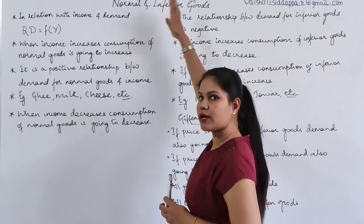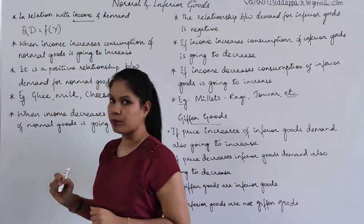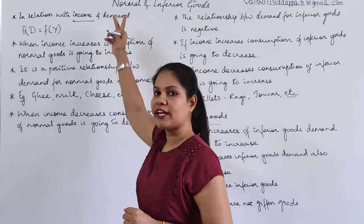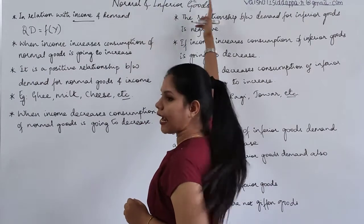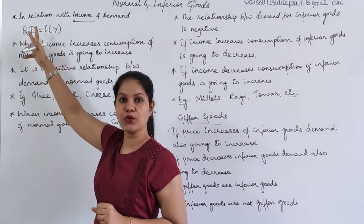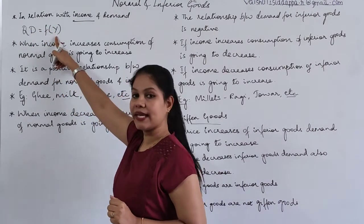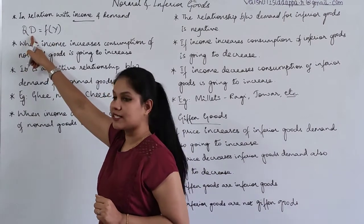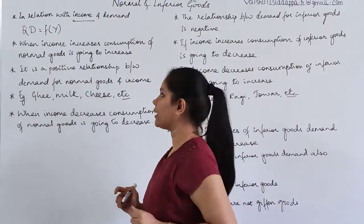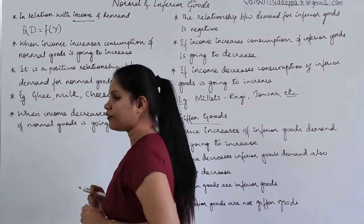To understand normal goods and inferior goods, the one determinant we are going to consider is income — the consumer's income. The functional relationship can be expressed as: quantity demand is a function of income, where income is the independent variable and quantity demand is the dependent variable. This functional relationship can be either positive or negative.